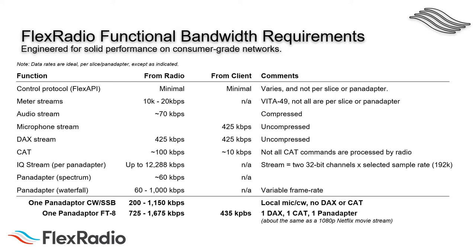The Vita 49 meter streams — data streams that various meters use to display information — can consume between 10 and 20 kilobits per second depending on what the operator is doing. The audio stream from the radio to a client is compressed and uses about 70 kilobits per second. The microphone stream from the client to the radio is 425 kilobits per second uncompressed, as is each DAC stream in use. Those of you who own a 6700 running eight simultaneous FT8 sessions on separate pan adapters are consuming about 8 megabits per second just for the DAC streams — and remember, your PC CPU has work to do as well.